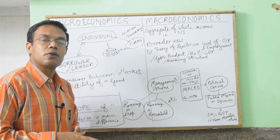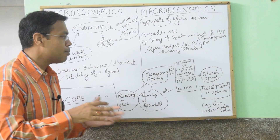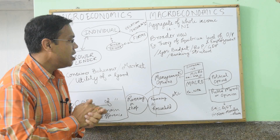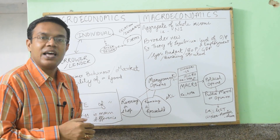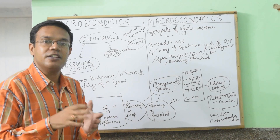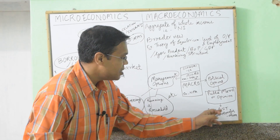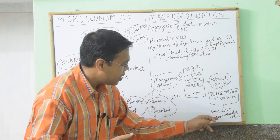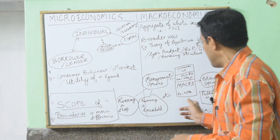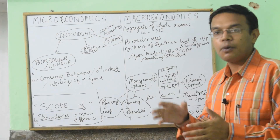A good example of macroeconomics is rising NPA — non-performing assets that our banking structure is dealing with. In today's financial year, our NPA is across 10 lakh crores, which is a huge challenge for India. A good example of public mood is GST — goods and services tax — and demonetization. These are examples that suggest what public mood or public opinion is about certain policies of the government.